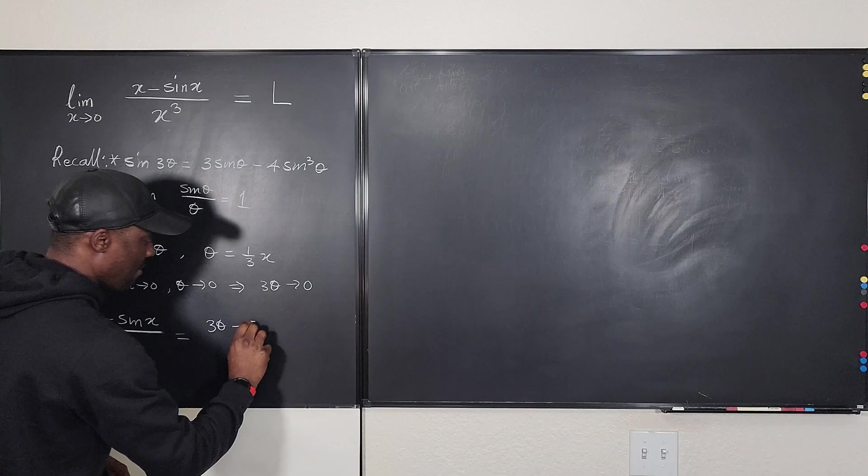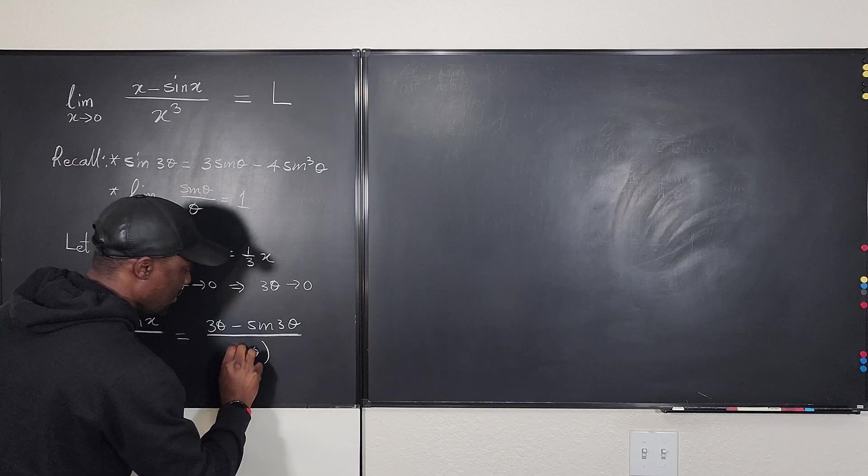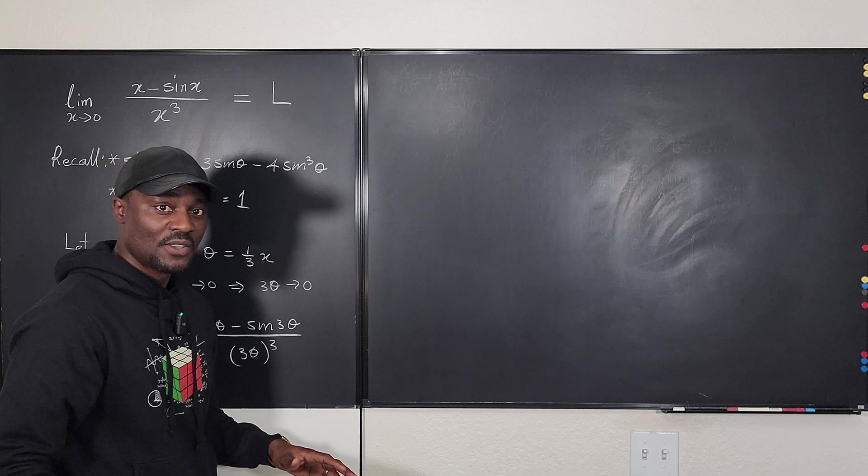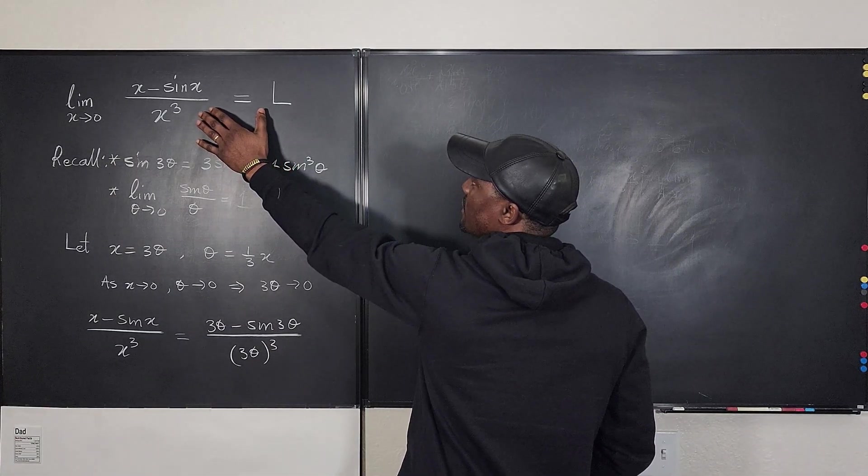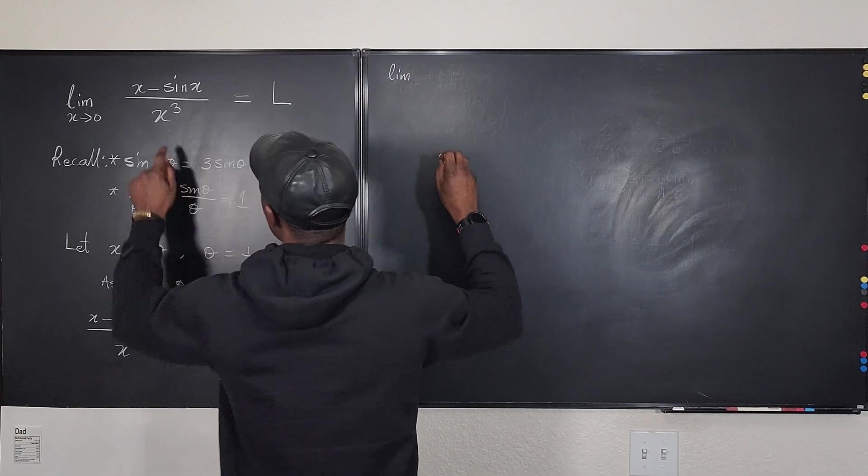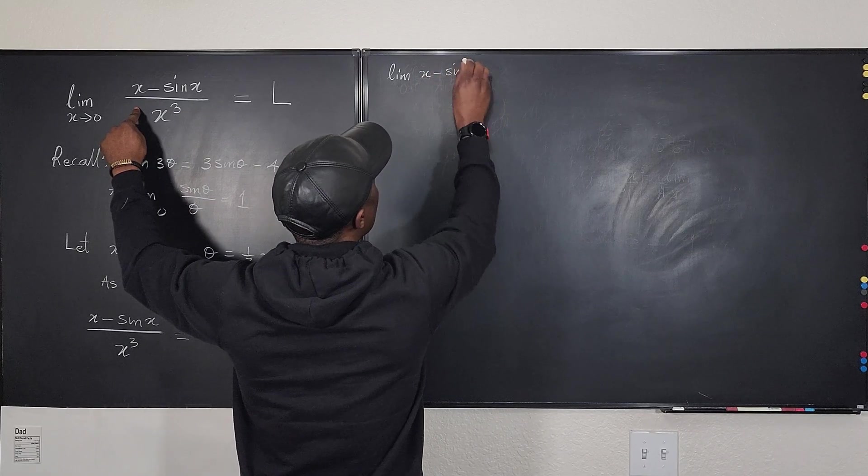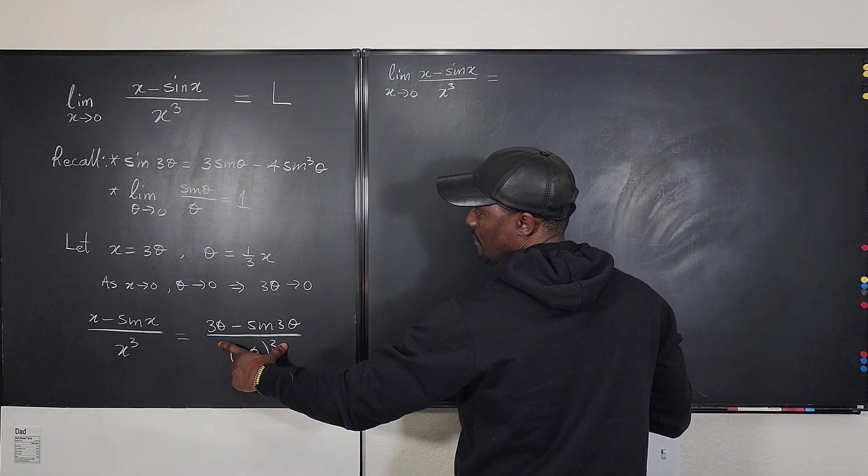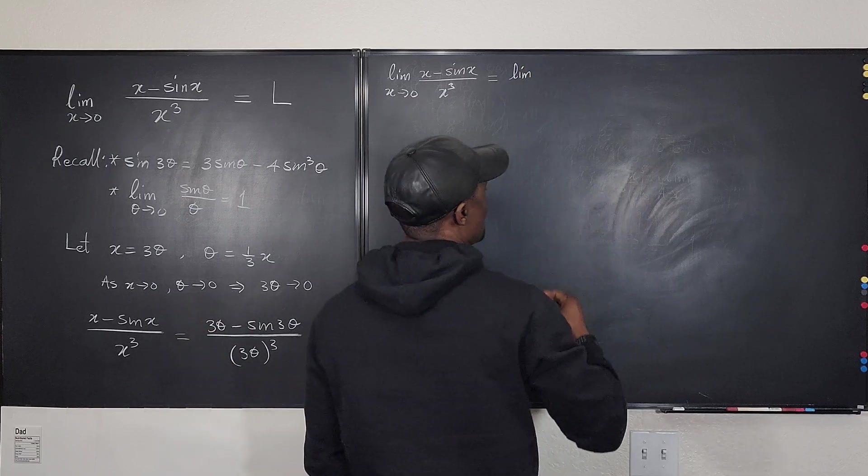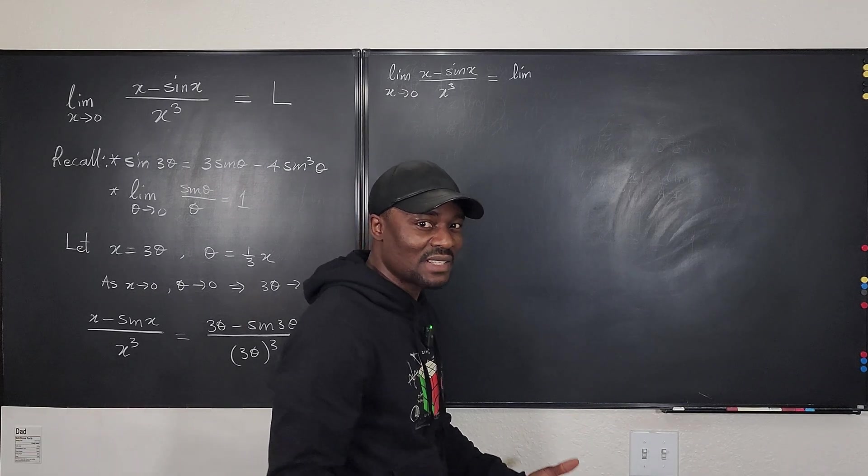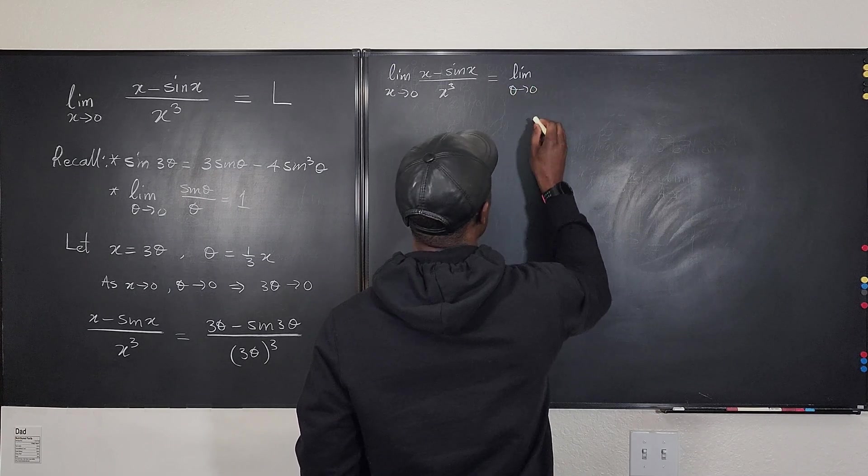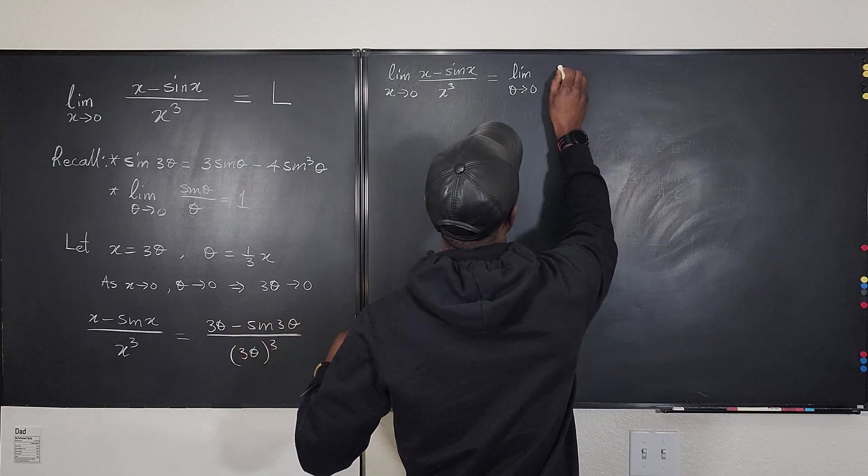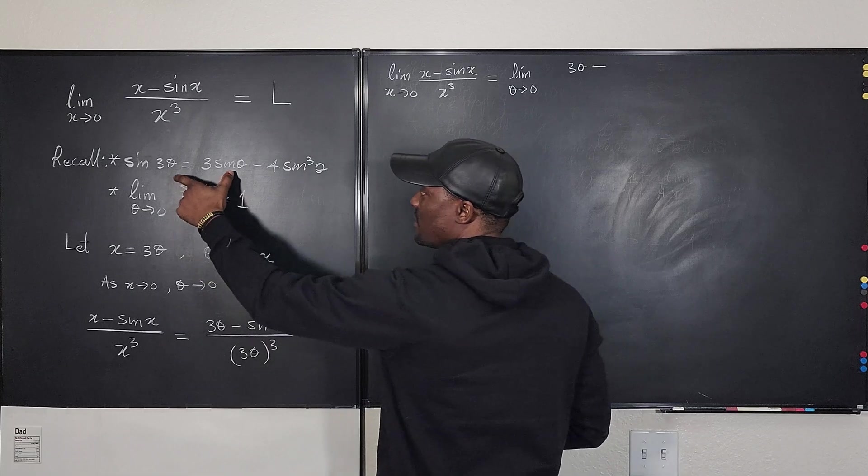So we can transform this expression such that x minus sine x over x cubed can be written as we just replace the x. It's going to be 3 theta minus sine 3 theta over 3 theta cubed. You go, it doesn't change anything. You're going to see it. This expression using this formula changes everything for us. So now let's go back here and take this limit. So we know that the limit as x goes to sine x, I mean, x minus sine x over x cubed as x goes to 0 can then be written as this expression. The limit as theta goes to 0. And so I'm just going to say as theta goes to 0 of this expression, 3 theta, which is going to be 3 theta minus.